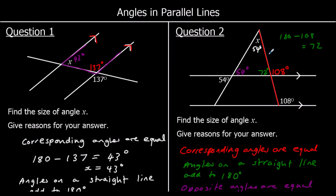We could be asked what type of triangle this is — that would be an isosceles triangle. Two equal angles makes it an isosceles triangle.